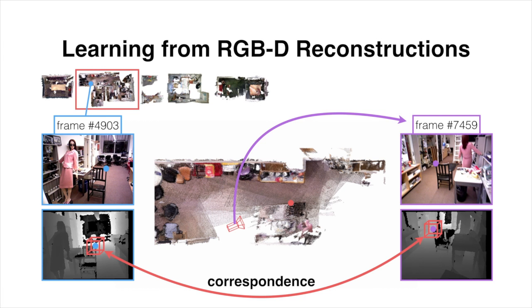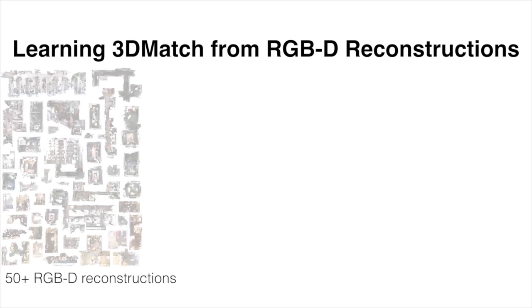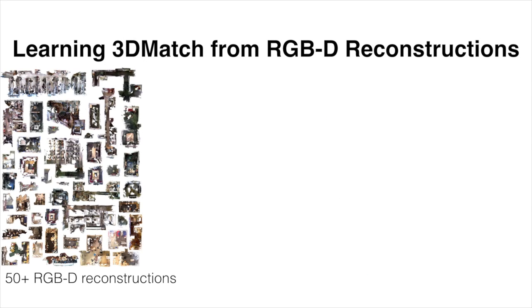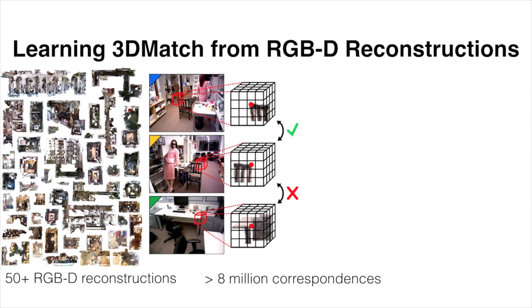To show this concept in action, we make use of over 50 different RGBD reconstructions and generate over 8 million 3D surface correspondences, as well as their local 3D patches, to train our 3DMatch ConvNet.